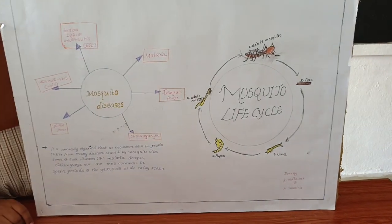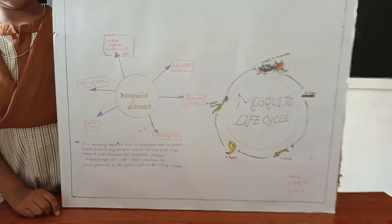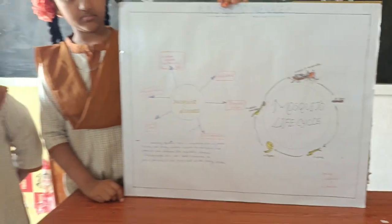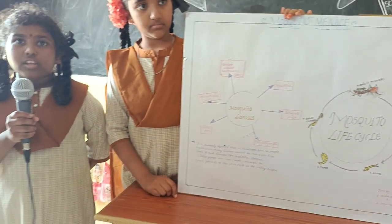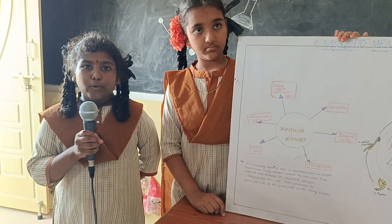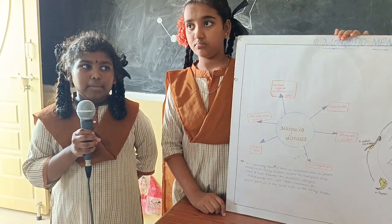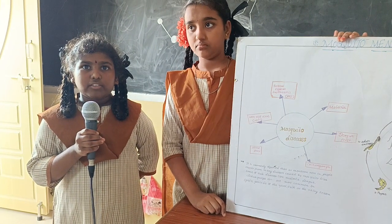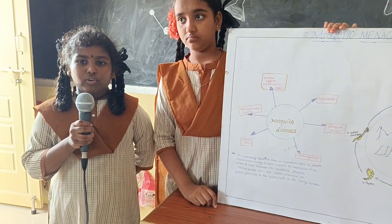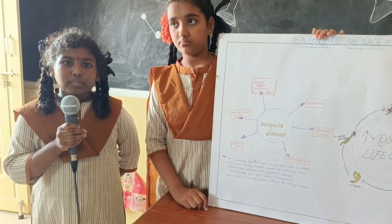The larva, which converts after a few months or few days, becomes a pupa. The pupa then turns into an adult mosquito, completing the life cycle.